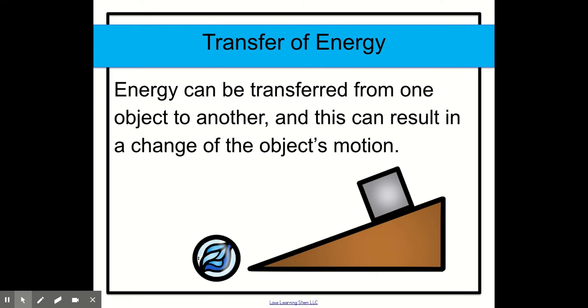So let's look at this example. It says here energy can be transferred from one object to another and this can result in a change of the object's motion. So let's say the cube fell down or rolled down the hill and hit the marble. The marble right now is not moving but when the cube hits the marble what's going to happen?